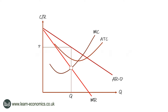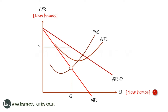To develop your answer, firstly set up the standard diagram for a firm operating in a non-competitive market. Next, apply context to the model. The question is about house building, so adjust the axes accordingly. Assume the firm — the house builder — is a profit maximizer. To show this, identify the output where marginal cost equals marginal revenue.